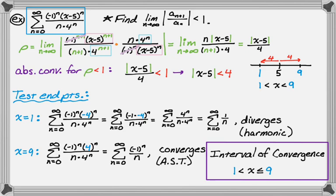So that's how we find the interval of convergence: use the ratio test to get the open interval, then test the endpoints to see what happens there. I hope you found this helpful, and good luck.